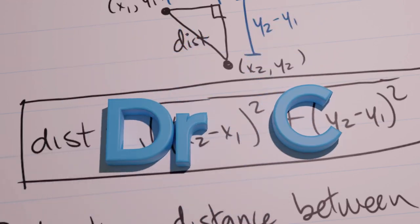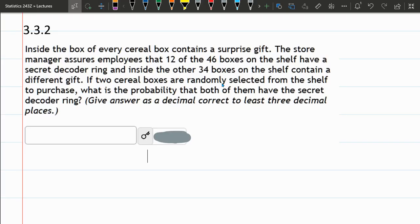In this section, our events are no longer independent. So that means what happens on the first outcome changes the situation for the second event.